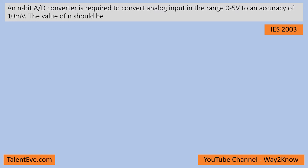Let us see how to solve this particular problem. The question is there is an n-bit A/D converter which converts analog input in the range of 0 to 5 volts to an accuracy of 10 millivolts. We need to know the value of n.